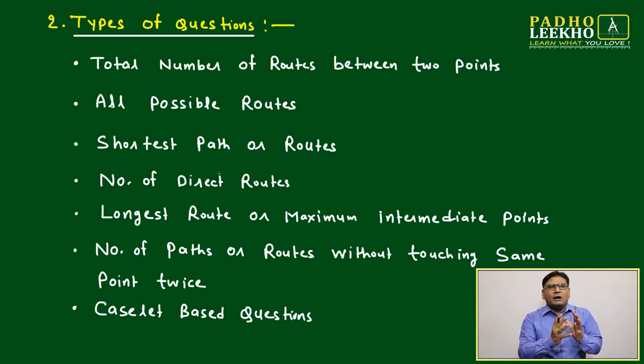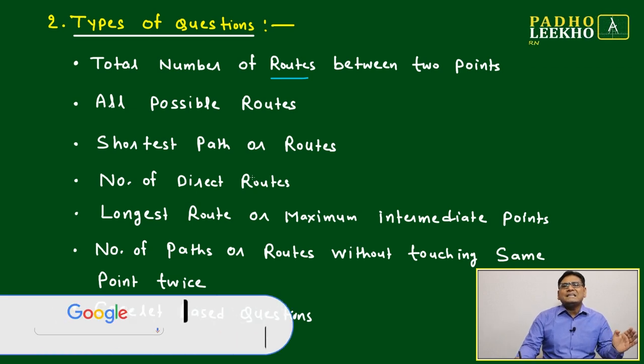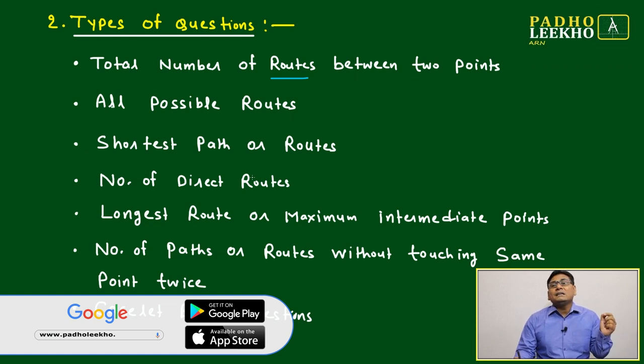Just will figure out or will make one good idea which type of questions generally asked, because conceptually it is not much to discuss. Only just basic idea: one-way, two-way route, how routes are connected, that much is enough. Now main thing is how many types of questions generally asked. If questions are coming from routes and networks, these are the famous category questions. First famous category is total number of routes between two points. If you have multiple options to reach a city or reach a point from some starting point, then how many number of routes will be possible.